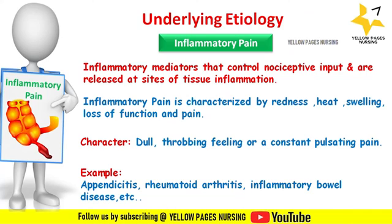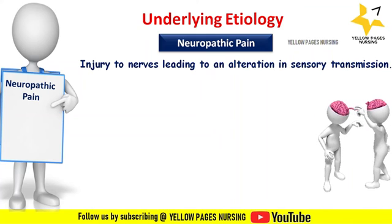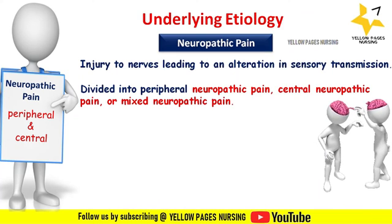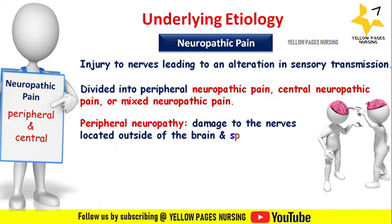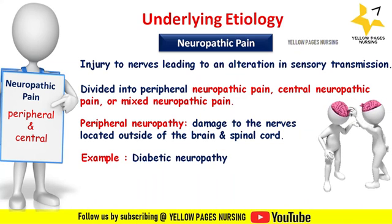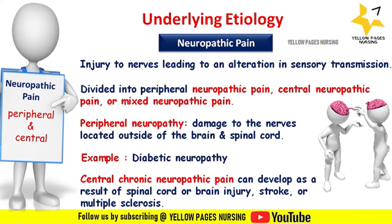Neuropathic pain is the result of injury to nerves leading to an alteration in sensory transmission. It may be divided into peripheral, central, or mixed neuropathic pain. Peripheral neuropathy results from damage to nerves outside the brain and spinal cord, causing weakness, numbness, and pain usually in the hands and feet — for example, diabetes. Central neuropathic pain can develop from spinal cord or brain injury, stroke, or multiple sclerosis.